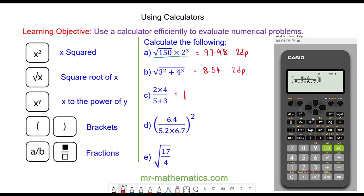And we press the square button, and our answer is 0.03 to two decimal places.